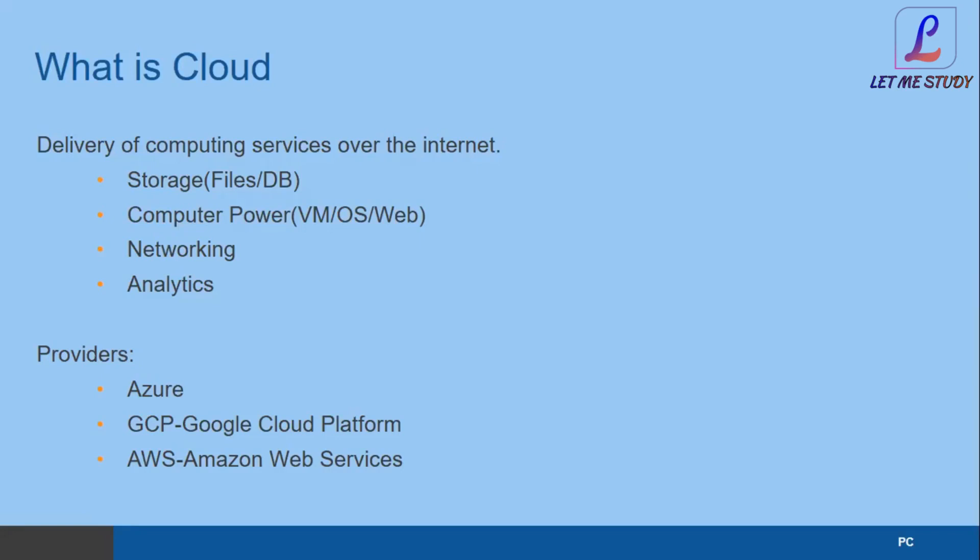That was all about the earlier on-premises environment. Everything used to be person dependent. There were limitations — suppose in the same building you're handling those servers, and there's a building collapse, power fluctuation, or fire accident. Then all your data and your application is gone.